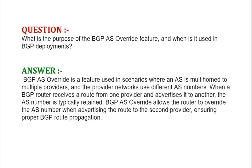Our interview question based on Service Provider Advanced Routing Solutions is: What is the purpose of the BGP-AS Override feature and when is it used in BGP deployments? BGP-AS Override is a feature used in scenarios where an AS is multi-homed to multiple providers and the provider networks use different AS numbers. When a BGP router receives a route from one provider and advertises it to another, the AS number is typically retained. BGP-AS Override allows the router to override the AS number when advertising the route to the second provider, ensuring proper BGP route propagation.